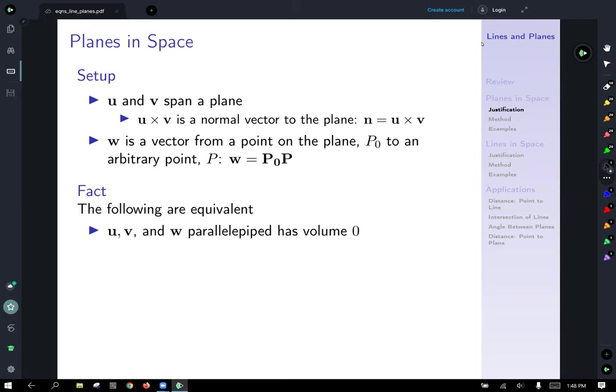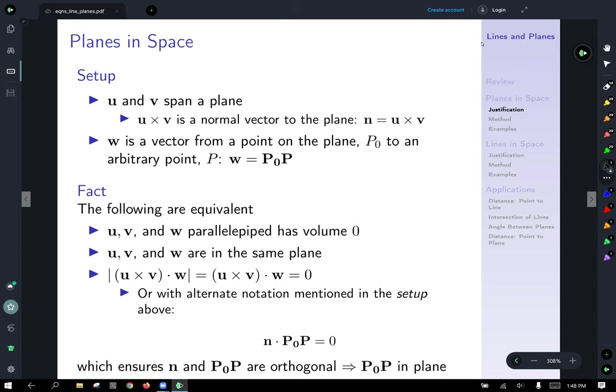And the following are equivalent. If u, v, and w, the parallelepiped has volume of zero, it's a flat parallelepiped, then u, v, and w are on the same plane. And so if the box product is equal to zero, the volume will necessarily be zero. And those three vectors will be on the plane, and that will ensure that our arbitrary point p is on the plane. Or with alternative notation, the dot product of n and the vector p0 to p is equal to zero, which ensures that n and p0 to p are orthogonal, if and only if p0 and p are in the plane. Because we replaced u cross v with n because n is equal to u cross v. So the box product becomes the normal of a plane dotted with a vector from a point on the plane p0 to another point. p will be on the plane if the dot product of these is zero.